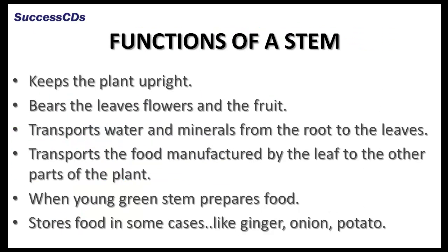A stem keeps the plant upright and bears the leaves, flowers and fruit. It transports water and minerals from the root to the leaves, and also transports the food manufactured by the leaf to the other parts of the plant. When young, a green stem prepares food too. It also stores food in some cases, like ginger, onion and potato.